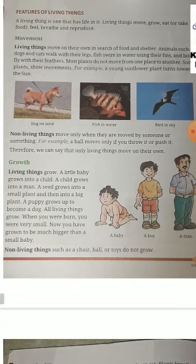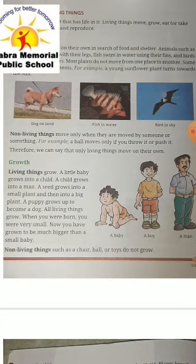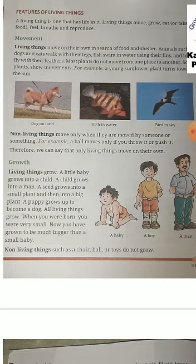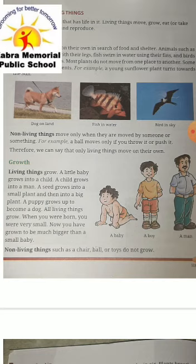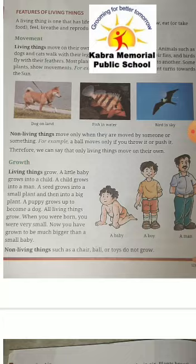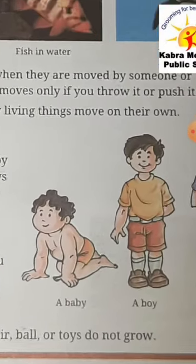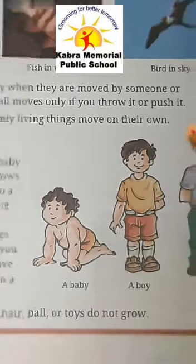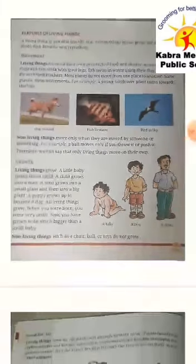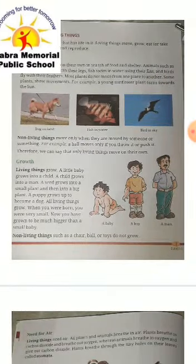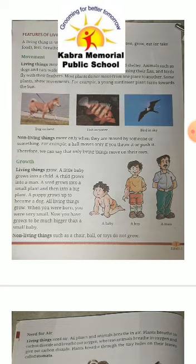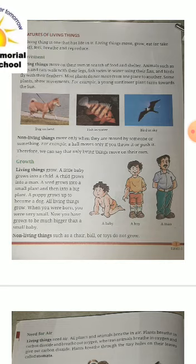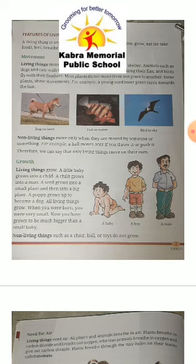Therefore, only living things move on their own. A plate kept on a table will stay there for years unless someone moves it or pushes it off. Now let's learn about growth. As this picture shows: a baby grows into a boy, and then a boy grows into a man.